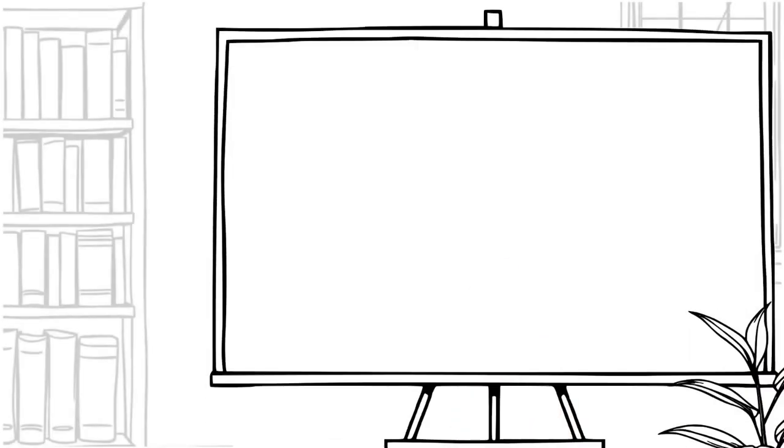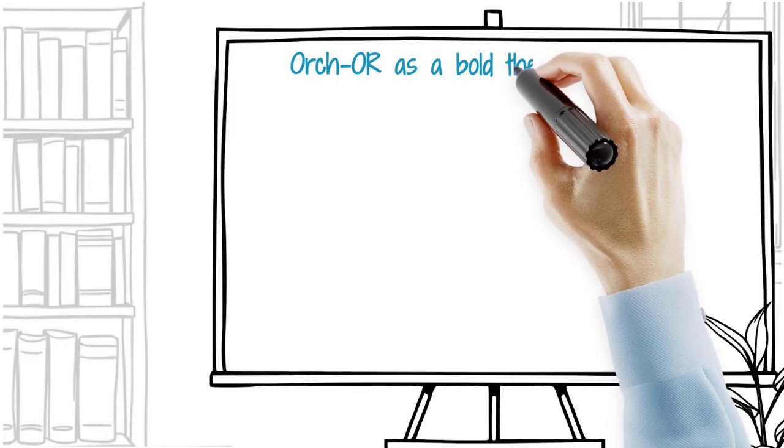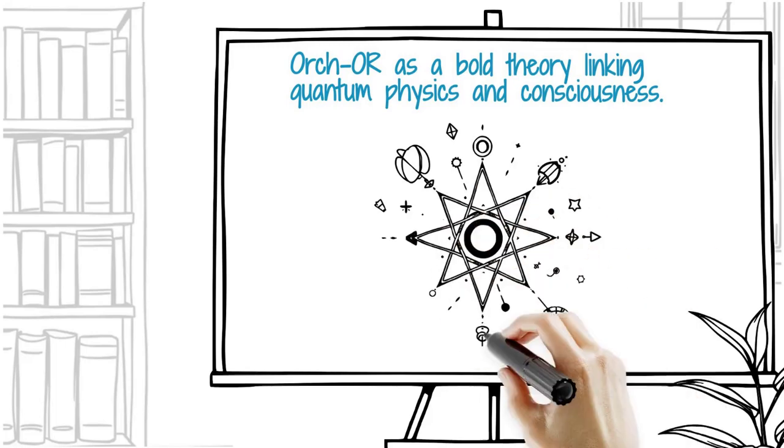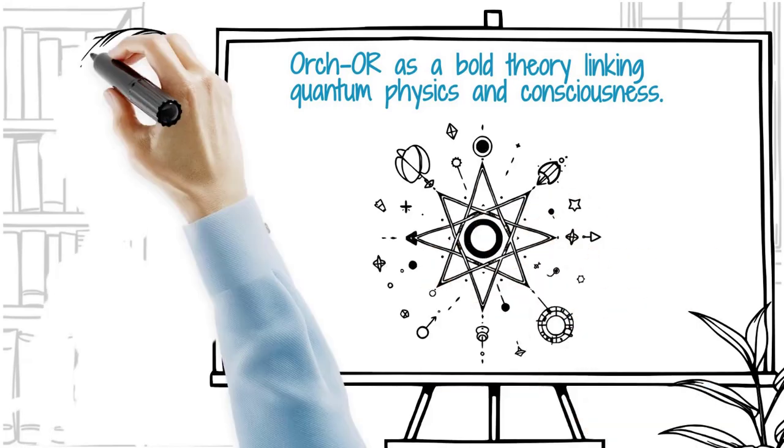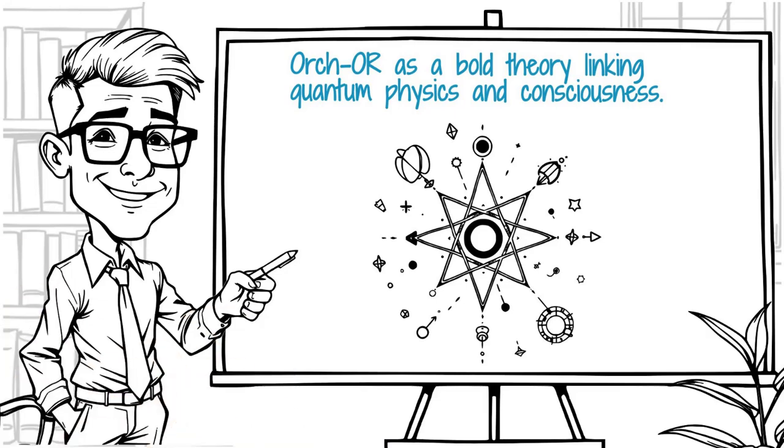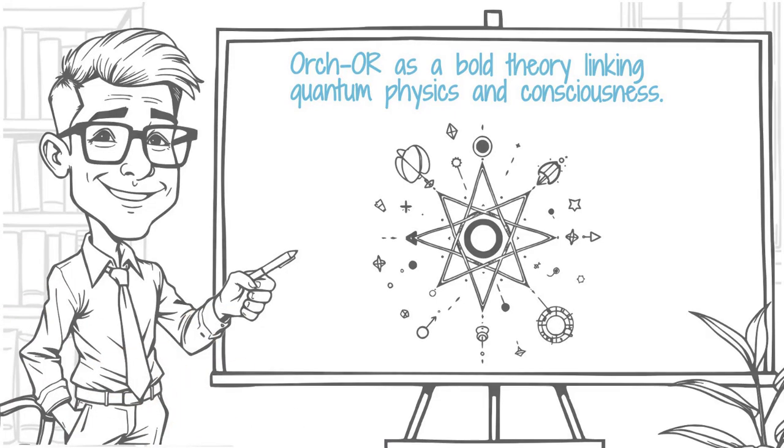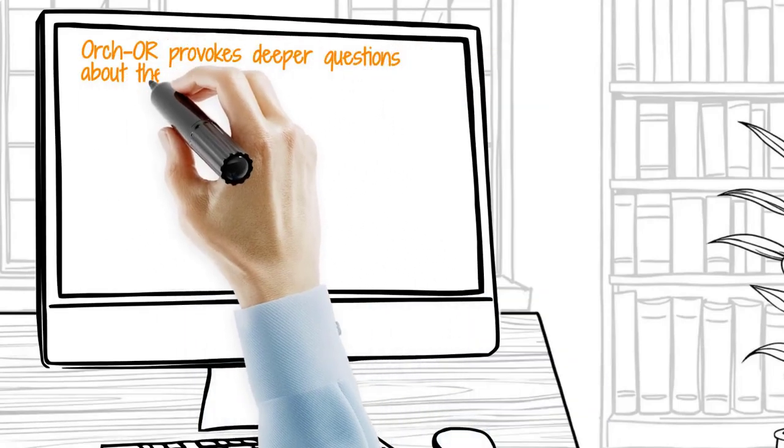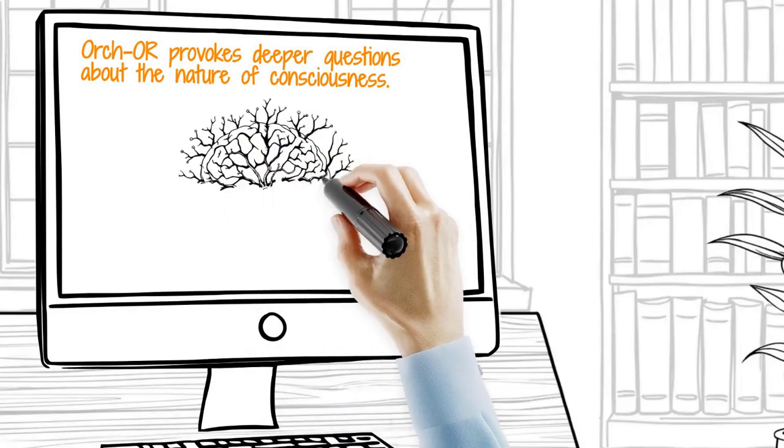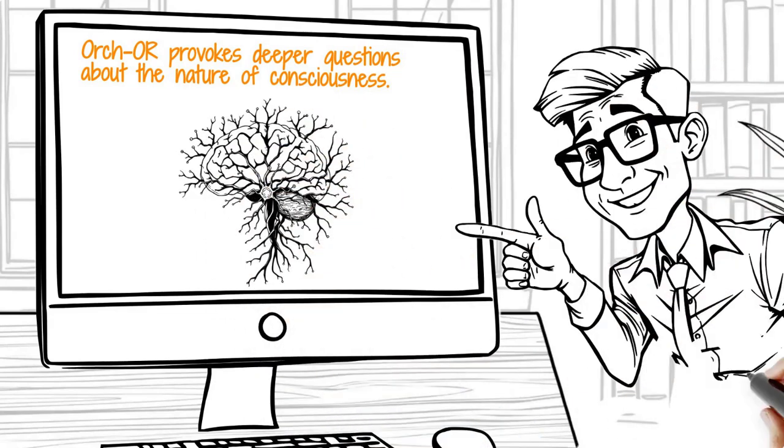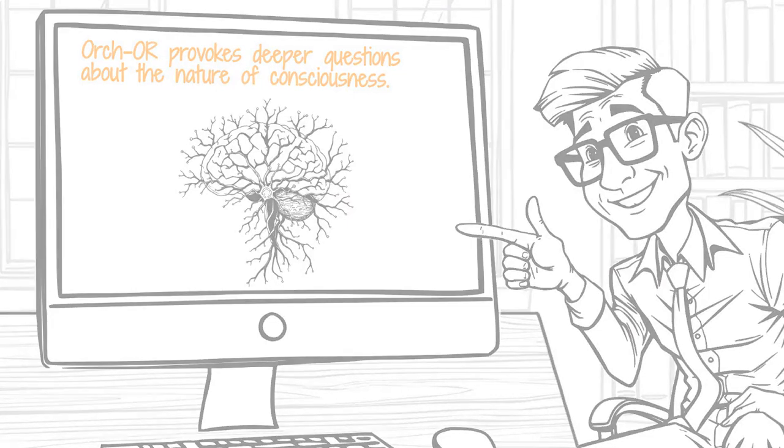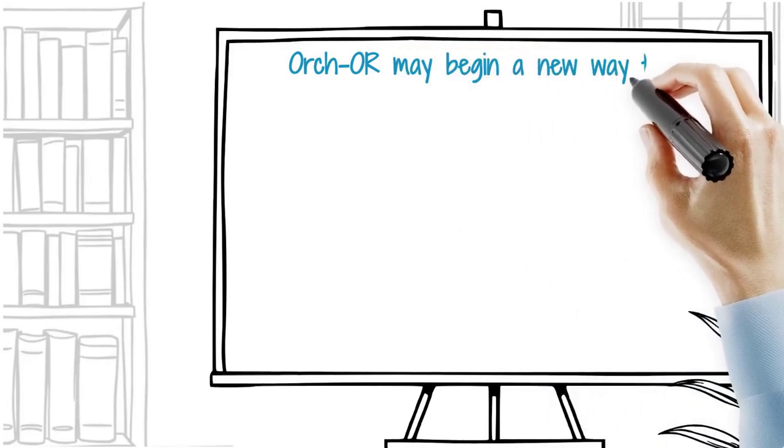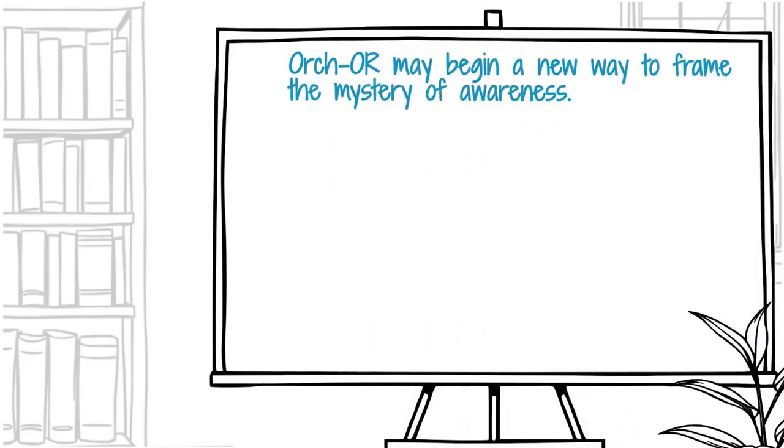Orch-OR remains one of the boldest theories linking quantum physics and consciousness, offering an explanation grounded in both biology and space-time geometry. While unproven and controversial, it has spurred rich interdisciplinary dialogue and opened conceptual space for experimental quantum neurobiology. Whether it stands or falls, it forces us to ask deeper questions: Is consciousness computational, biological, or fundamental? Are we minds made of neurons or space-time collapses sculpted by quantum logic? Orch-OR might not be the final theory, but it could be the beginning of a new way to frame the mystery of awareness.